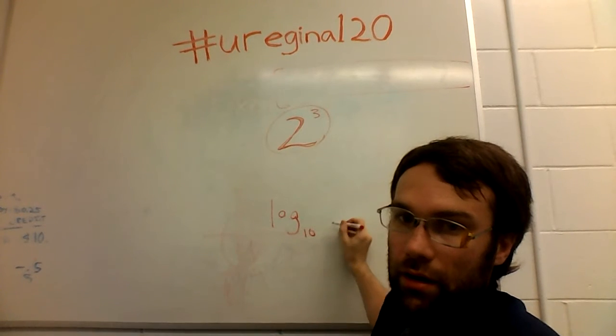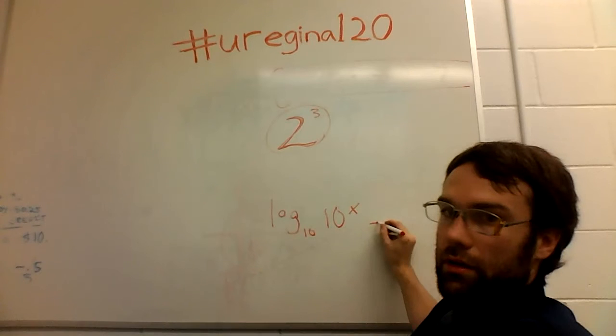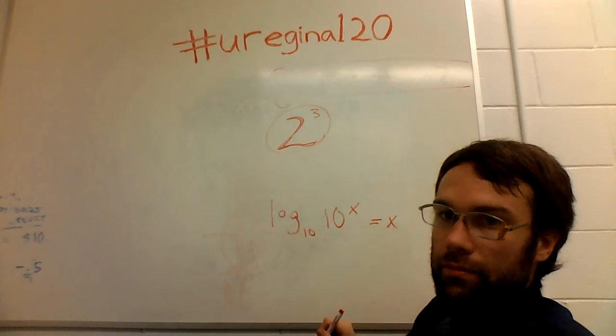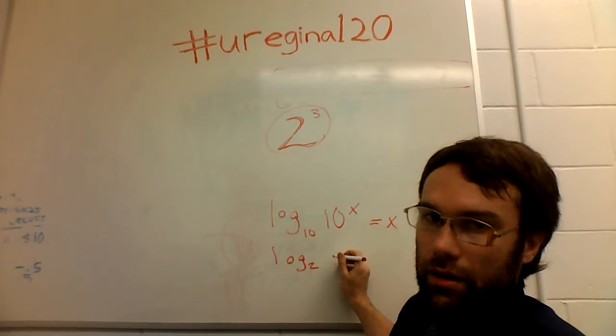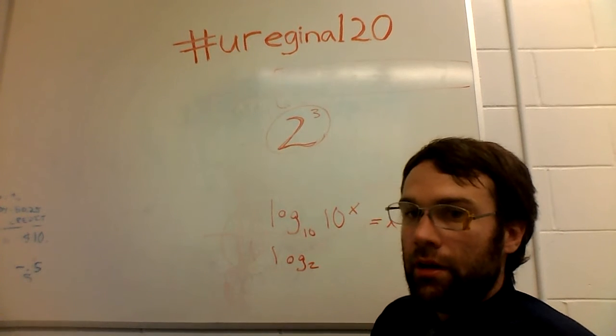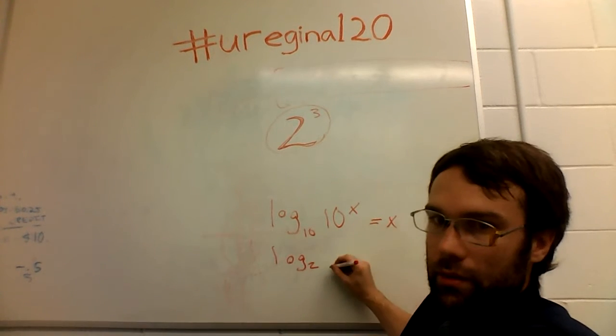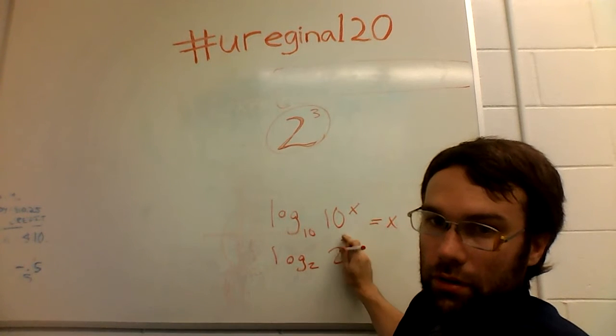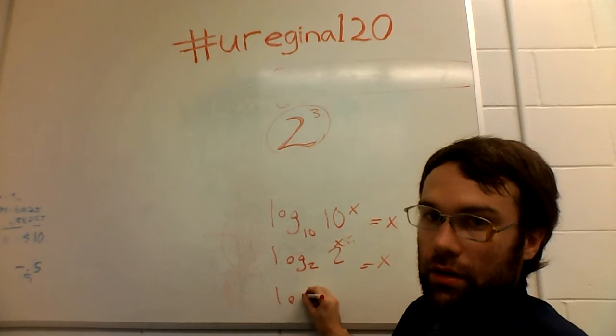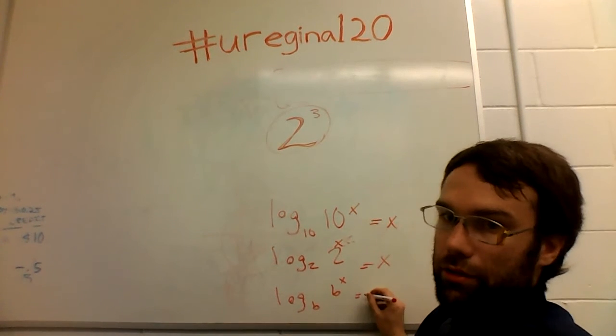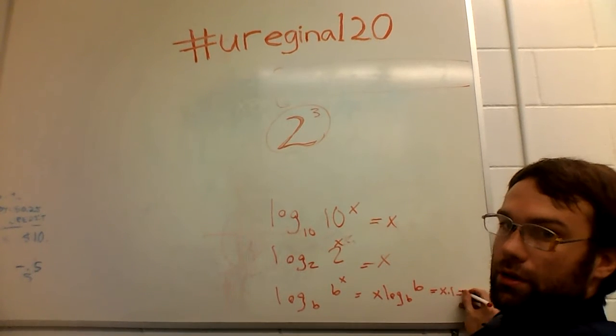Of the exponential function of 10 to the x, is x. Simple enough. Let's look at some other log numbers. Log of 2, this comes up a lot in information technology and information theory. It's incredibly important. Most of the field is practically based on that. But the log 2 of 2 to the x is, again, x. Generally, the log of b, of b to the x is equal to x log b to the b, which is equal to x times 1, which is equal to x.